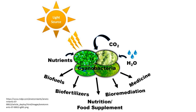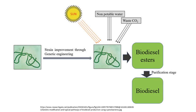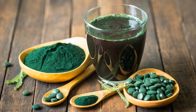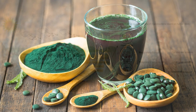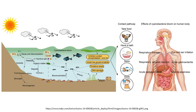Many cyanobacteria being studied today are important model organisms with potential applications in biotechnology for bioethanol production, food coloring, and as a source of human and animal food, dietary supplements, and raw materials. Cyanobacteria can also produce a range of toxins called cyanotoxins that can pose a danger to humans and animals.